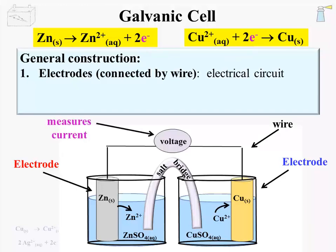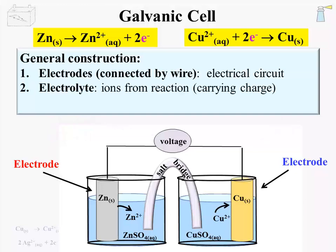The flow of electrons can be measured by a voltmeter, or the energy of the transfer can be used to power a device like a light bulb. As seen in the half-reaction equations, there needs to be more in the half-reaction than just the solids — the ions need to be present in their respective half-cells. Often the ions are found as electrolytes, ions dissolved in water. Electrolytes are solutions capable of carrying an electric charge, and they are also part of the circuit.